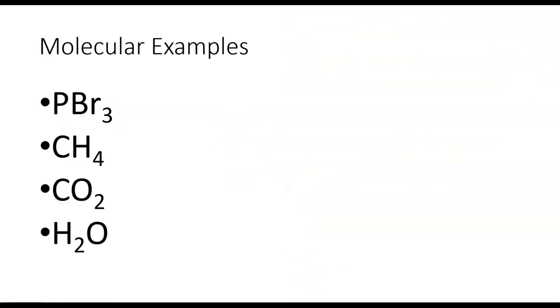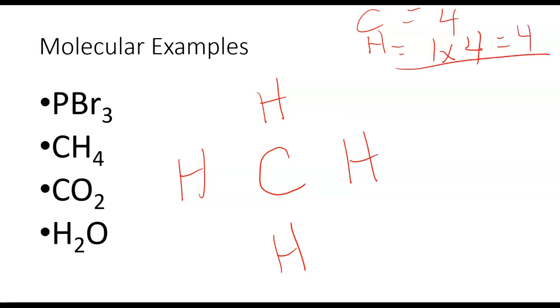Let's take a look at the next example. CH4. We have carbon and we have four hydrogens. Carbon has 4 valence electrons, hydrogen has 1, but there's 4 of them, so we have 4, so that gives us 4 plus 4, so I have 8 valence electrons I need to have in my final structure. I'm going to attach each atom to the central atom.